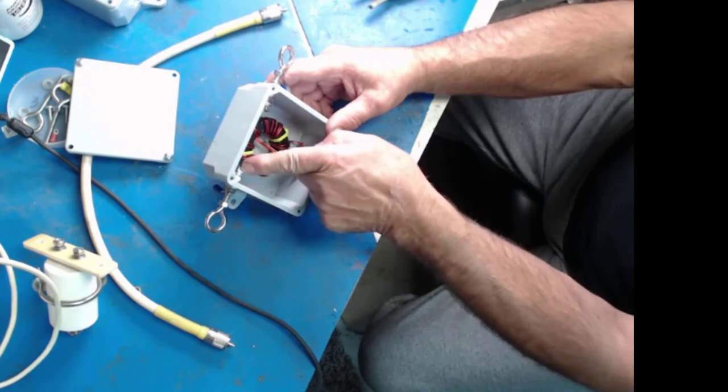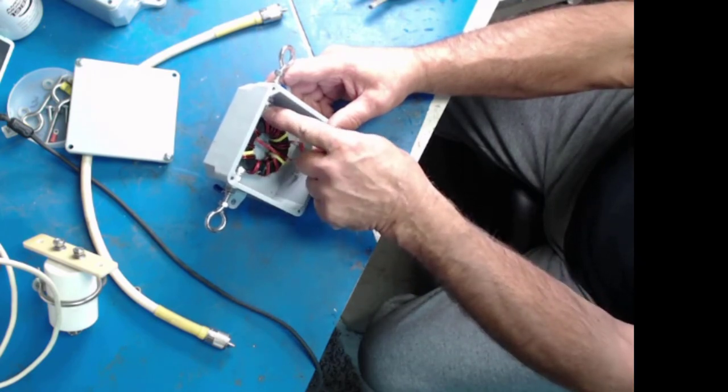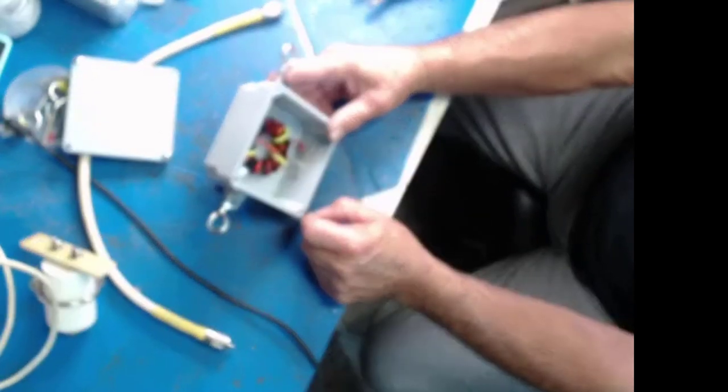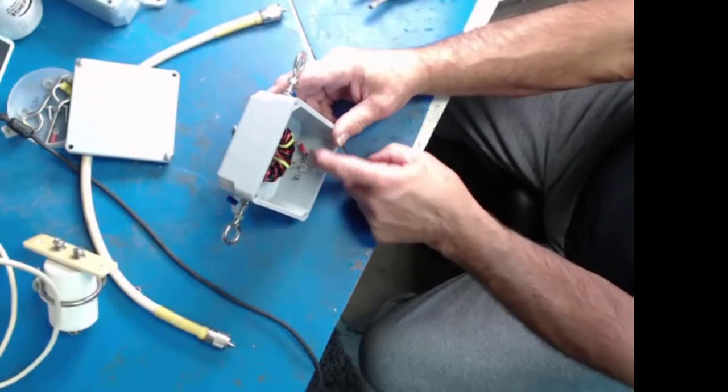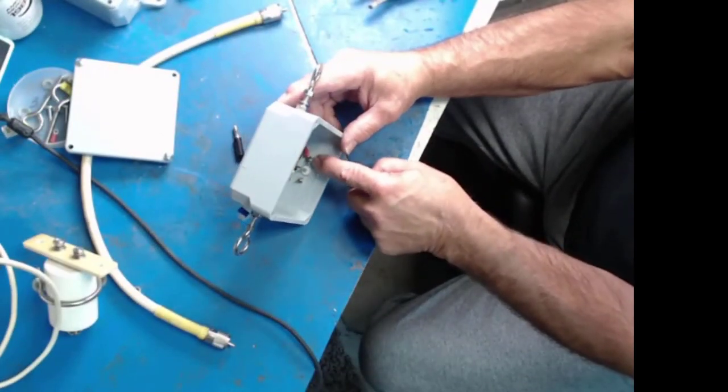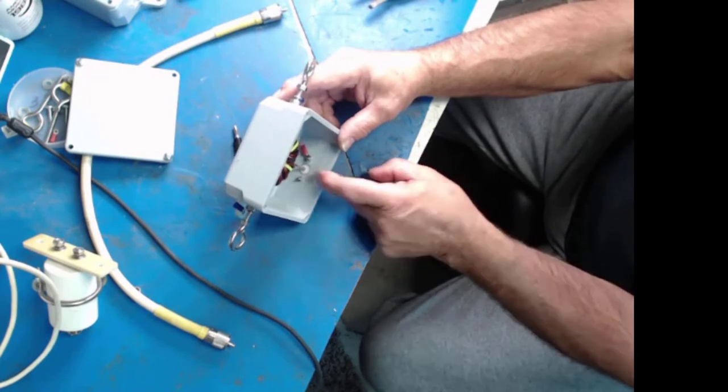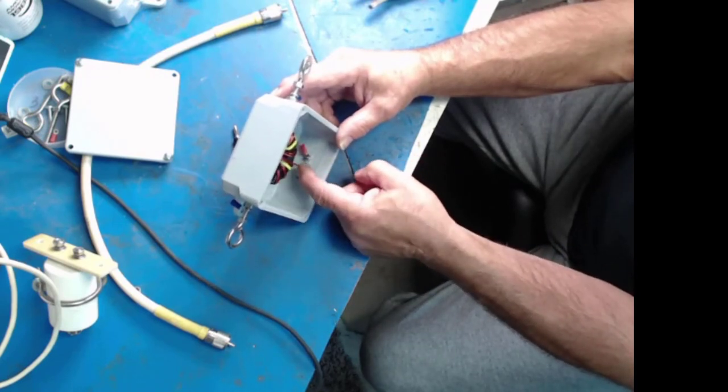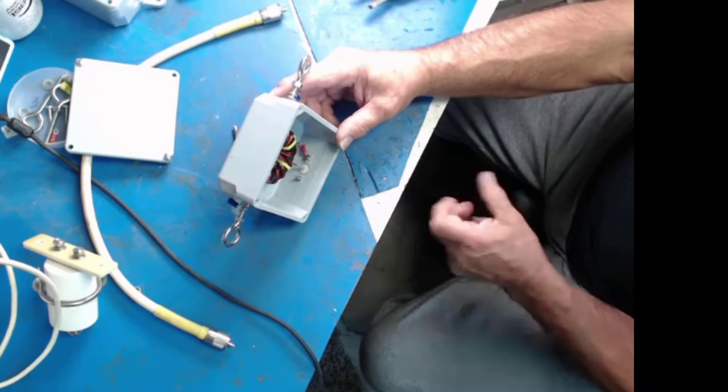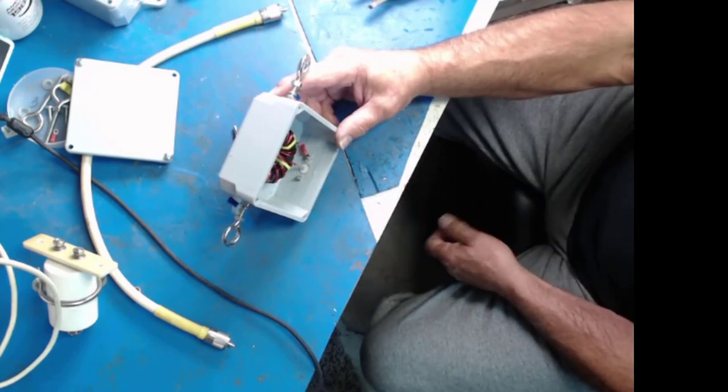At this point we've now tightened up the two nuts on here so this end is connected. Both of these ends are connected and the other end is connected to the ground right here, and we've soldered the second wire to the center pin of the SO-239.